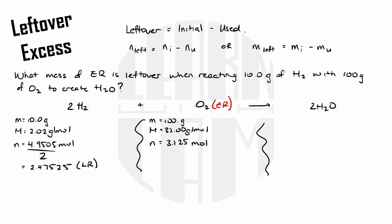Now that we know that oxygen is the excess reactant we know that 3.125 moles is the initial amount of moles and what I'm looking for is the amount of moles used. For that I'm going to ratio over my limiting reactant since I know all of that was used up and that it controls how much of the other reactants is used up as well.